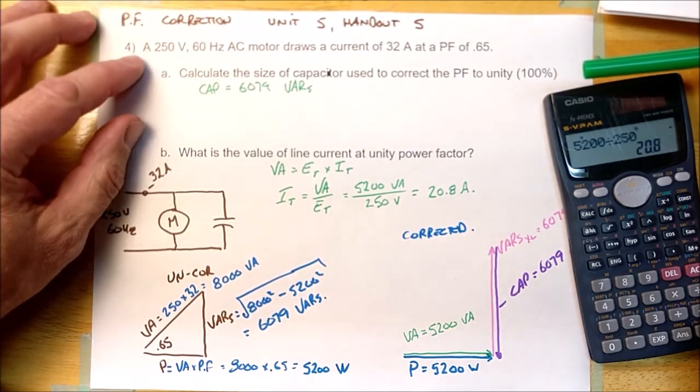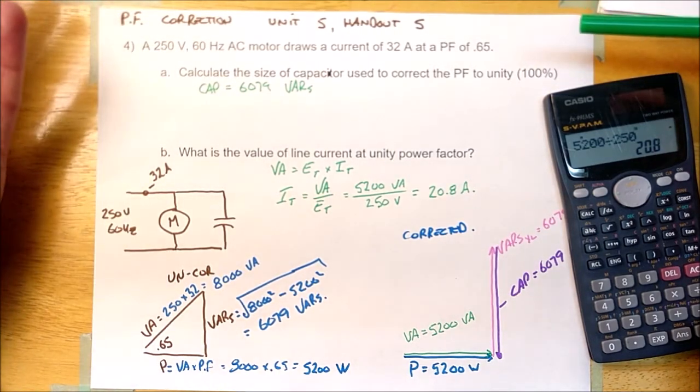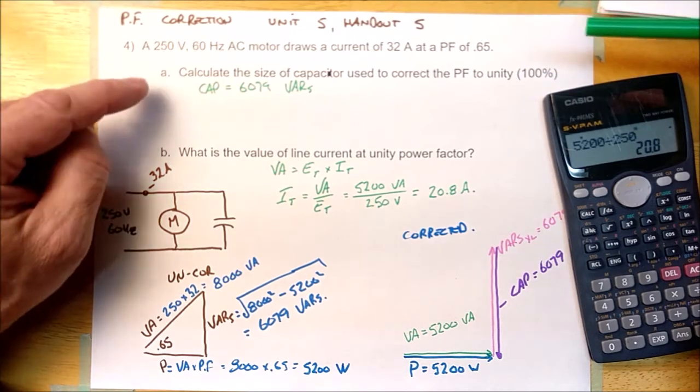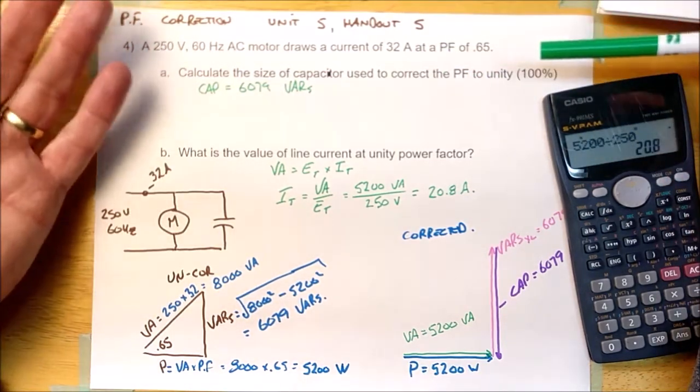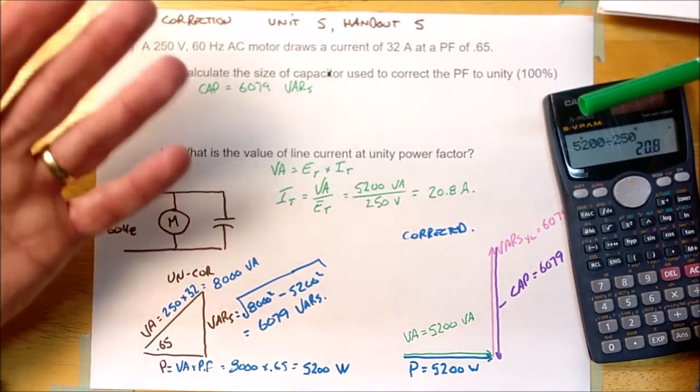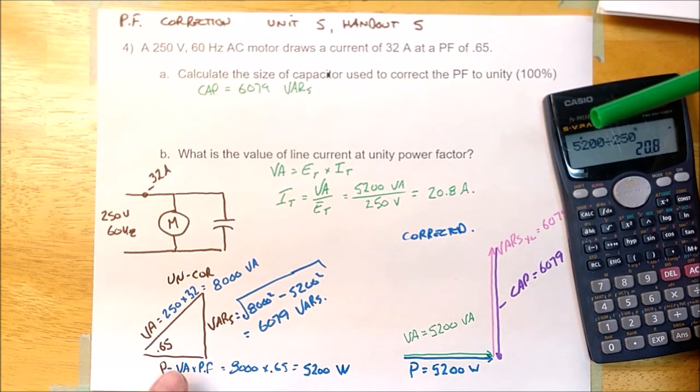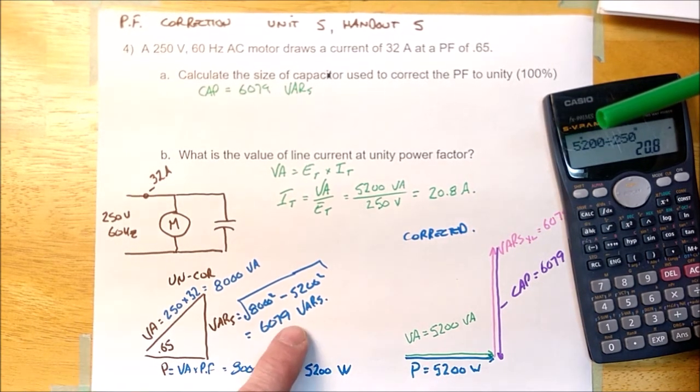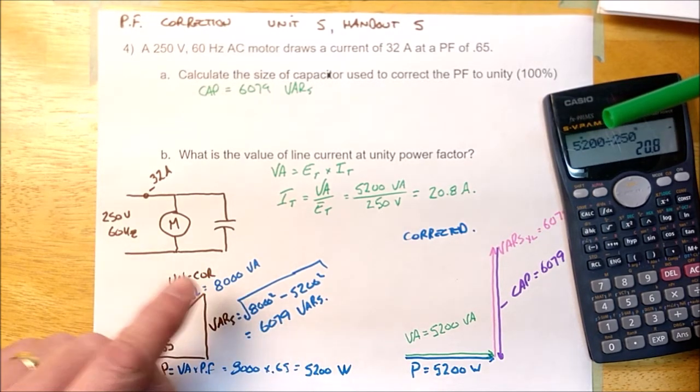Whenever you're doing power factor correction, it doesn't matter whether you're correcting to unity or 90%. But as soon as you realize that it's a power factor correction question, you're going to have to figure out what's going on with the circuit before correction. In other words, calculate the true power, the reactive power, and the VA. Get the whole thing filled in.